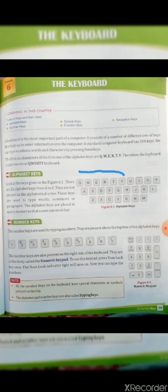First is alphabet keys. There are 26 alphabet keys. What do they help with? For typing words, sentences, and paragraphs. If you want to write something, these alphabet keys are used. These alphabet keys are properly set.